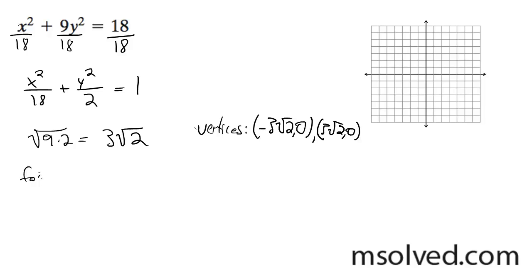And then for my foci, it's going to be the larger side minus the smaller side. So it's going to be the square root of 18 minus 2, which is equal to the square root of 16, which is equal to 4.